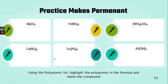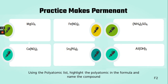Practice is the important thing. Here it says: using the polyatomic list, highlight the polyatomic in the formula, then name the compound. I'm asking you to do this in two steps because you have to identify the polyatomic before you start putting the name together. If you're at home watching, you might want to hit pause for a second and then come back and check. First, I'm going to go through and highlight the polyatomics.